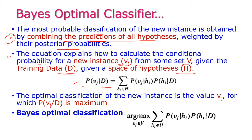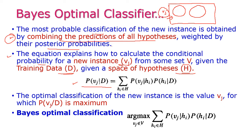Here we have the hypothesis space capital H. From this we have the training data, which is classified into, for example, two classes. The new instance vj will enter this hypothesis space, and we need to classify it. With the help of the already-classified training data D, we need to classify vj.